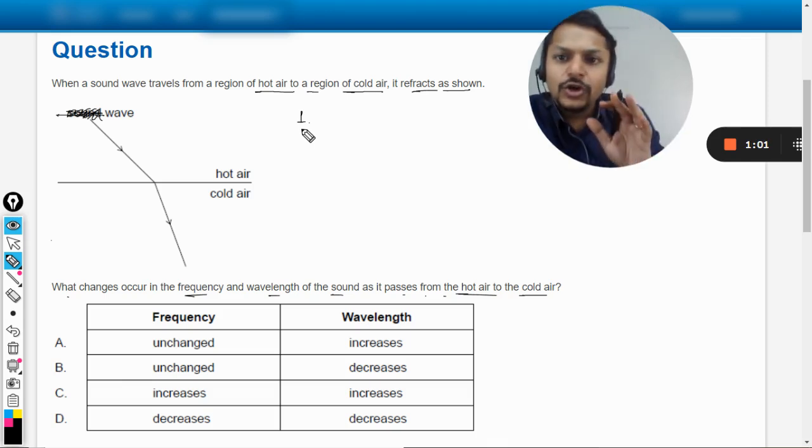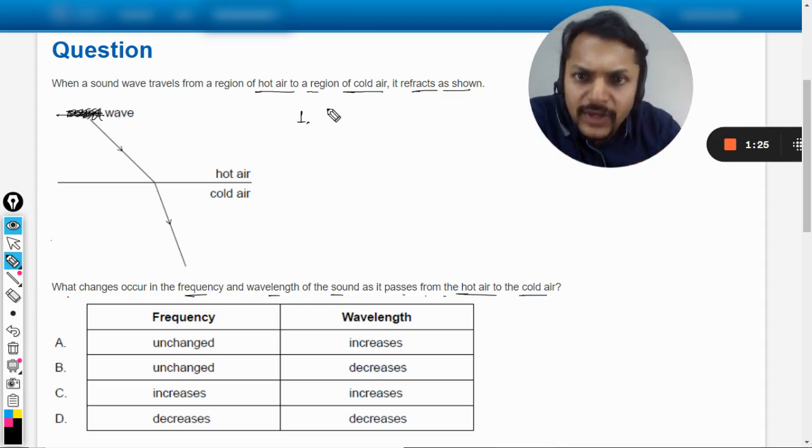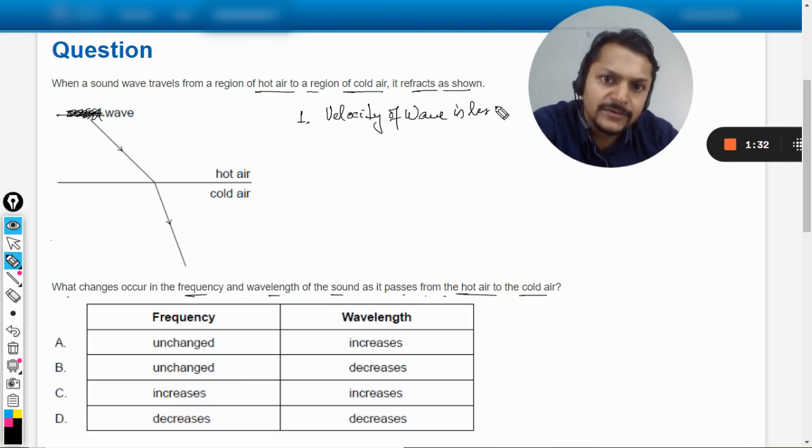So first of all to understand that, I would be explaining this thing. The first thing that we need to note is whenever a wave is traveling, the medium in which the velocity is lesser, we call it denser. Like for example, we say this medium is optically denser, this medium is optically rarer. So we're not actually talking about the density, we're talking about the velocity of the wave.